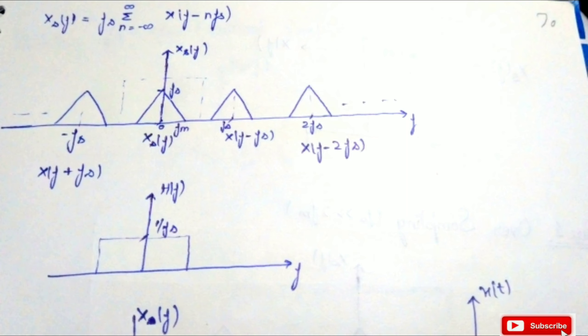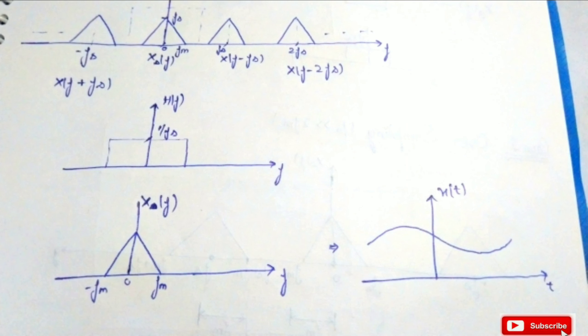We need to extract our message signal focused about the origin from the sampled signal. We pass the sampled signal through a low-pass filter, but we choose the magnitude of the low-pass filter as 1/fs, because our sampled signal has magnitude fs and we need to cancel that term. In the frequency domain, when we multiply X_s(f) with H(f), the fs term cancels and we get our message signal with magnitude 1.